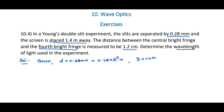The distance between the central bright fringe and the fourth bright fringe is measured to be 1.2 cm. So, the position of the fourth bright fringe, y₄ = 1.2 cm = 1.2 × 10⁻² m. We need to find out the wavelength.